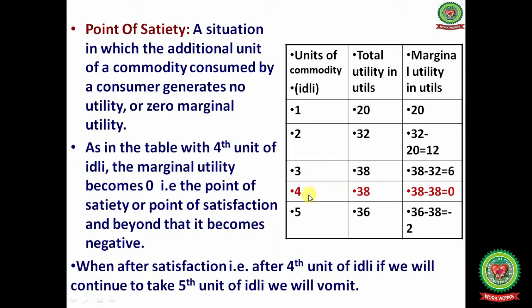Every household chooses only that combination of goods that yields maximum total utility. Once the combination is selected, there is no incentive to change — to consume more or less. This is known as the consumer's equilibrium position.